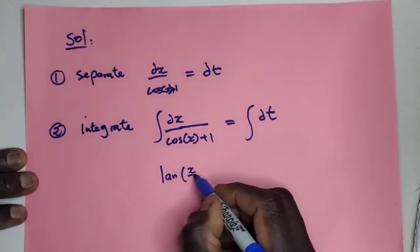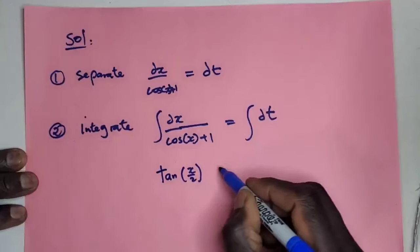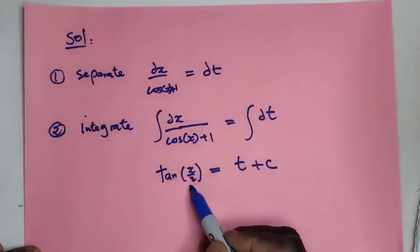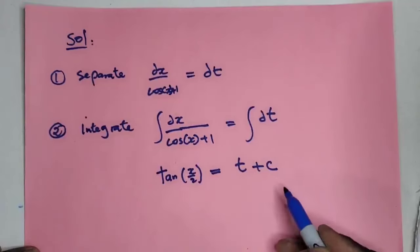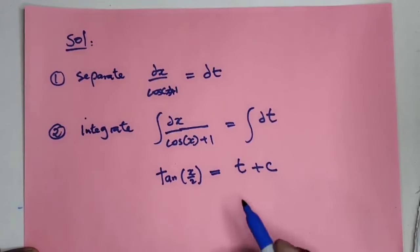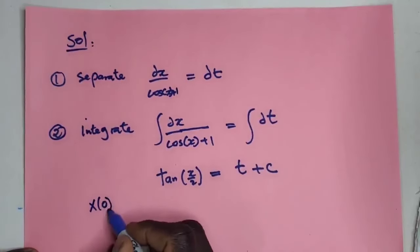tan(x/2) = t + c. Now I will do the expansion of this later, but for now let's just get the solution. So at t = 0, the function is 1/2, so plug that one in.